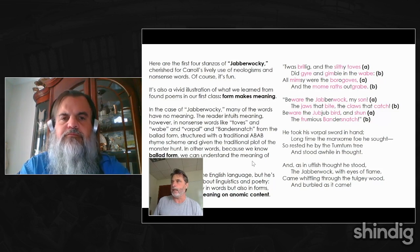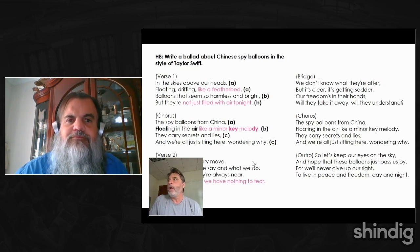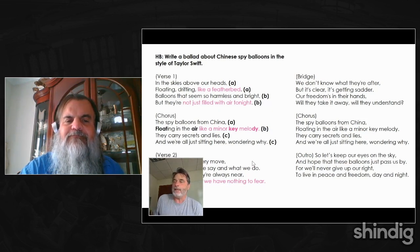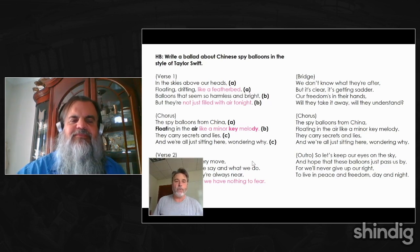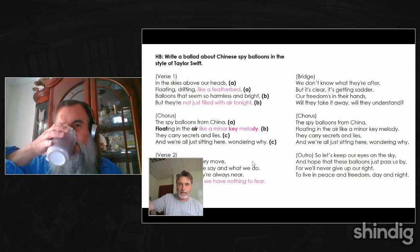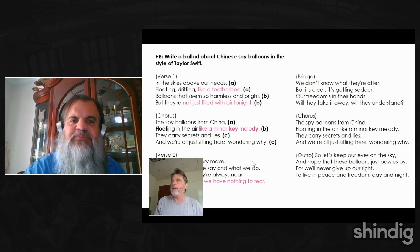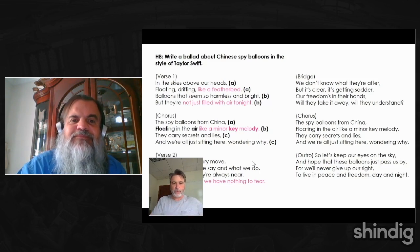The ChatGPT prompt — and we experimented with this in class — was to write in ballad form. It was early February, the day everyone was talking about the Chinese spy balloons, and simultaneously Taylor Swift was breaking the internet. So the question was: how do you take any content, impose a form on it, and how does the meaning of that content change through that imposition? We used ChatGPT to marry the news story of the spy balloon with Taylor Swift's songwriting technique.